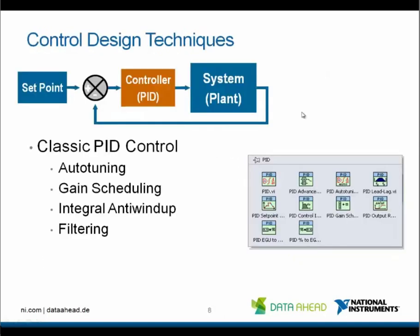This is a closed-loop control with a classic PID controller. To help you find the right gains for your controller, you can use auto-tuning functions. When your system needs different parameters at different operating regions, you can use gain scheduling. Integral anti-wind-up helps avoid issues with the integral part of the controller when the controller is saturating over time.